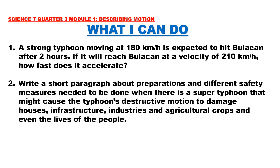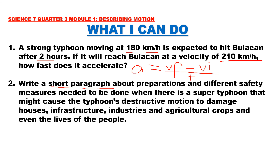What I Can Do: Problem 1 — A strong typhoon is moving at 180 km/h and is expected to hit Bulacan after 2 hours. If it will reach Bulacan at a velocity of 210 km/h, how fast does it accelerate? Use the formula: acceleration = (Vf − Vi) ÷ time. Problem 2 — Write a short paragraph about preparations and safety measures needed when a strong typhoon might cause destructive damage to houses, infrastructure, industries, agricultural crops, and lives of people.